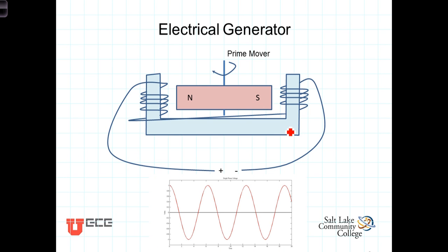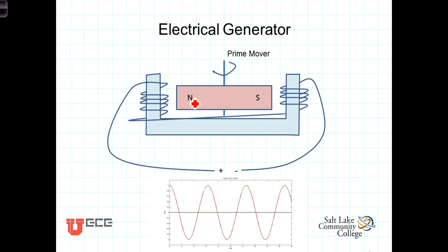An AC electrical generator consists of a magnet connected to a shaft where the shaft is turned by some primary force — that could be something mechanical like wind or steam. As the magnet rotates between these stationary coils, the magnetic flux of the magnet intersects the coils and generates an electrical potential or voltage between the two ends of the wire. You get a positive and negative voltage established between the two ends of those coils. As the magnet continues to rotate, the direction of the field reverses, causing the polarity of the voltage to alternate at a frequency equal to the rate of rotation.